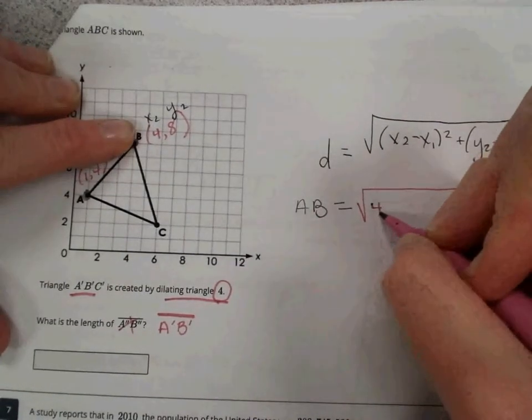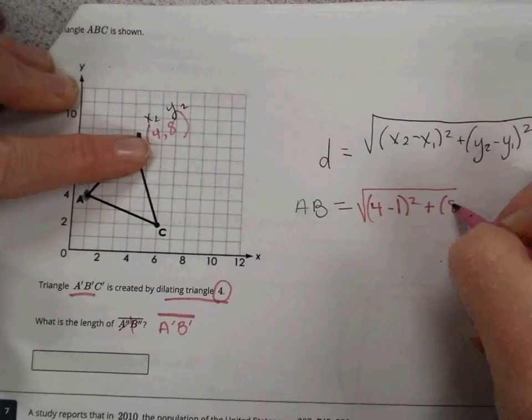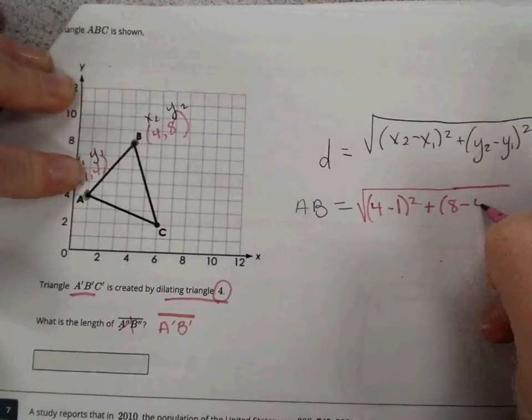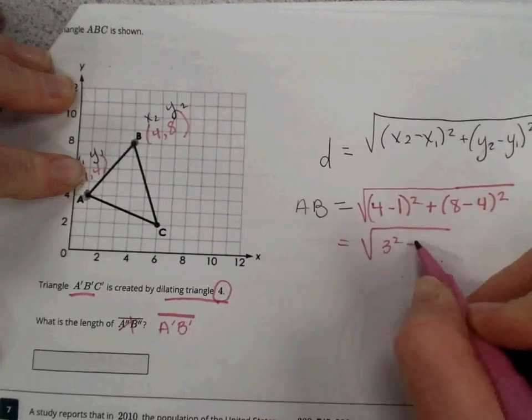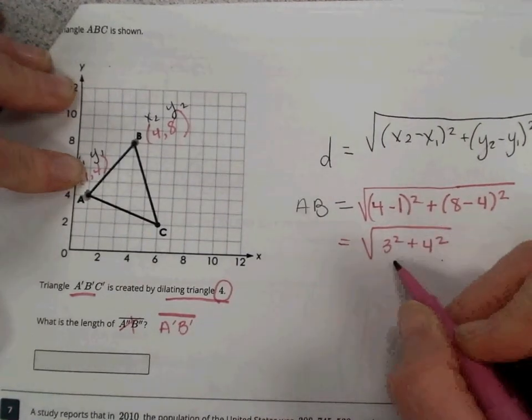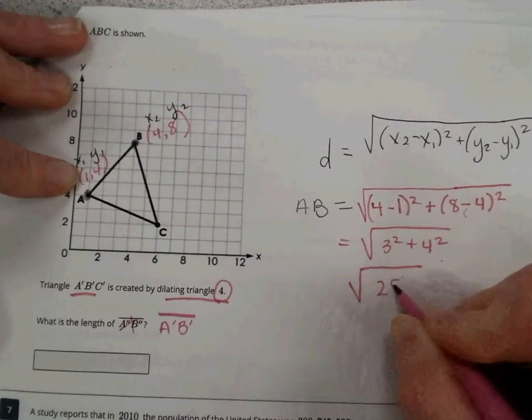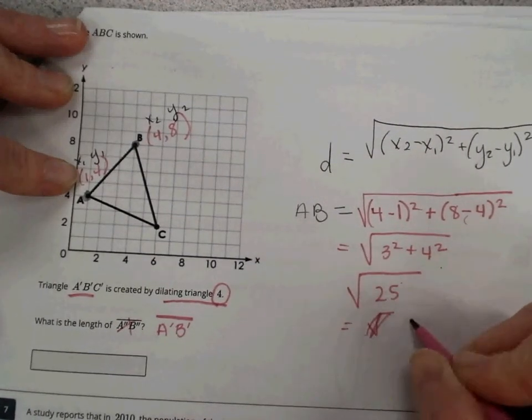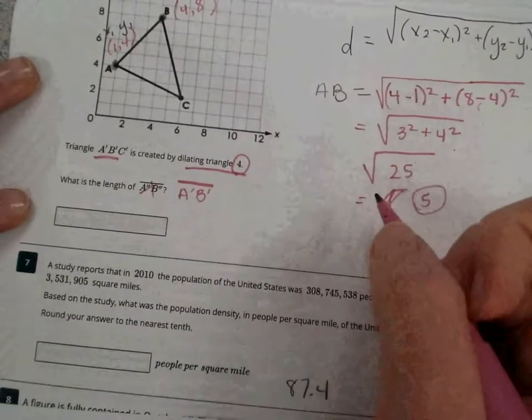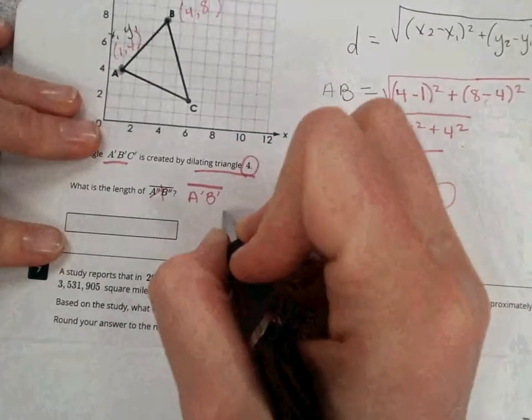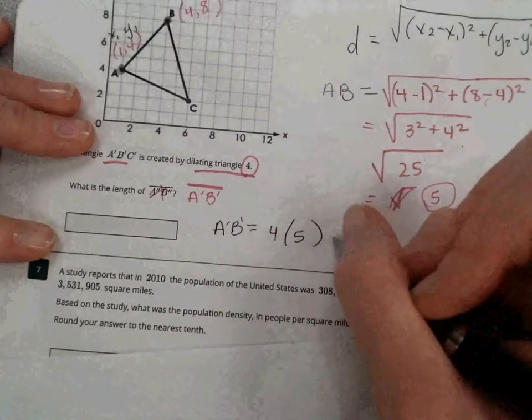Substitute for X2, a four. Substitute for X1, a one. For Y2, I substitute an eight. Substitute for Y1, a four. And now, we have four minus one is three. Eight minus four is four. So, we have the square root of nine and 16, which is 25. So, square root of 25 is five. So, I know the length of A, B is five. So, therefore, the length of A prime, B prime, we just multiply. So, A prime, B prime would equal four times five, which is 20.